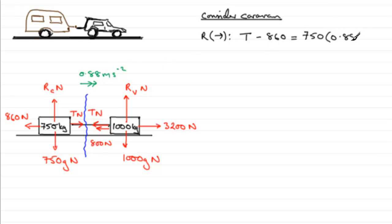If we work this out by adding 860 to both sides, we'd end up with T equals, well if you do 750 times 0.88 you get 660, and then we add the 860, so that tension T comes out to 1520 newtons.